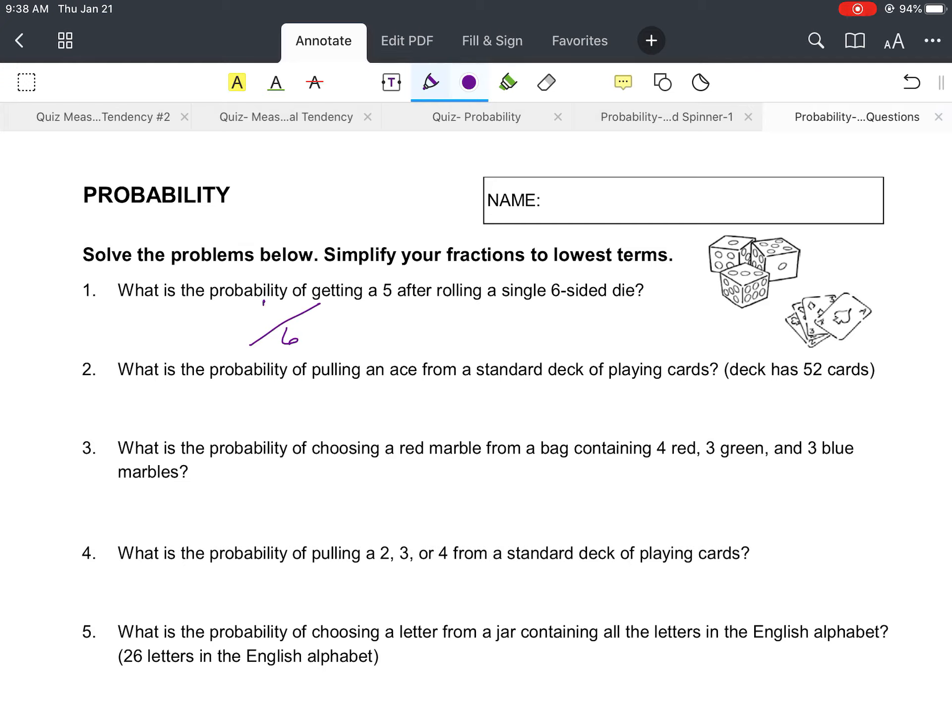And in order to land on a five, well there's only one side that has a five as an outcome. So our probability is going to be one-sixth. We have one in six chances of landing on a five.